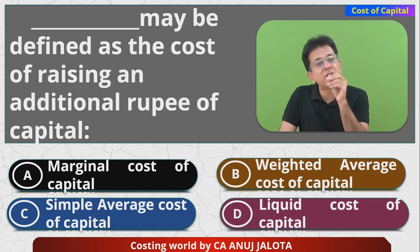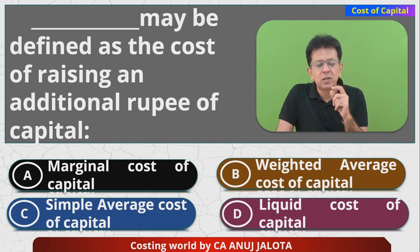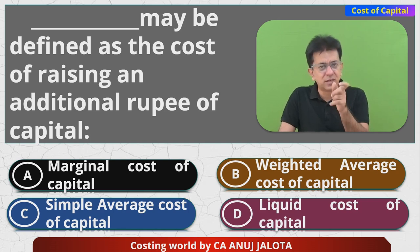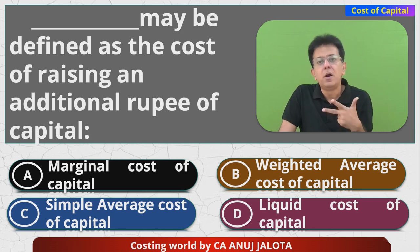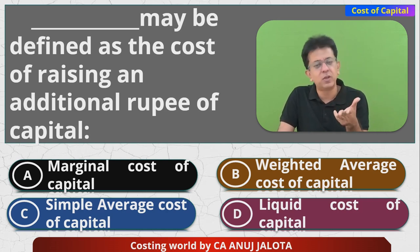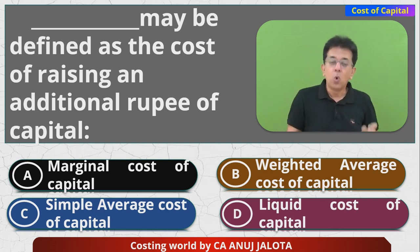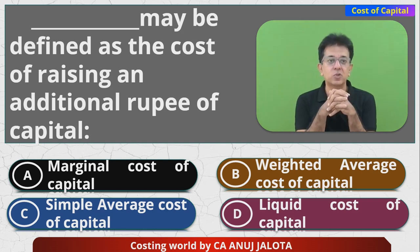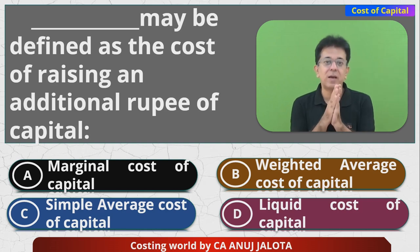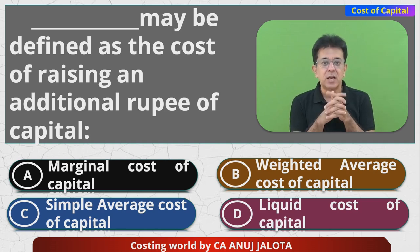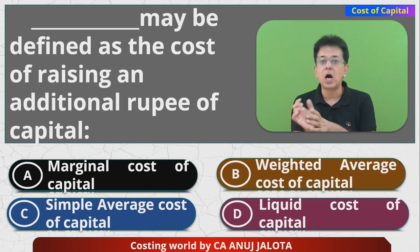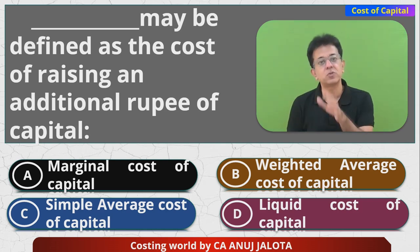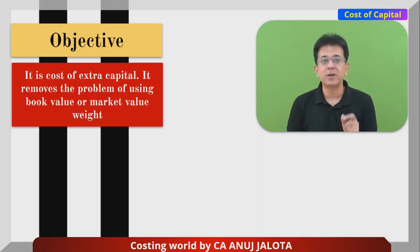Now suppose a company already has 10 crore rupees of equity and preference already issued, but it wants to raise 5 crore rupees more. Out of that 5 crores: 2 crores by equity, 1 crore from existing reserves and surplus — so 2 plus 1 equals 3 — then 1 crore through preference and 1 crore through debt, totaling 5 crores. The cost of this extra 5 crore capital is called Marginal Cost of Capital. Its advantage is that however you are going to raise those 5 crores, that itself becomes your weights.